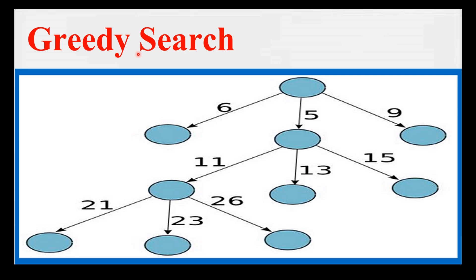In natural language applications, this process is automated using language models which predict the next word based on the previous context. The greedy search algorithm selects the word with the highest probability, and the process is repeated for each subsequent word. While greedy search is simple and computationally efficient, it has some limitations.